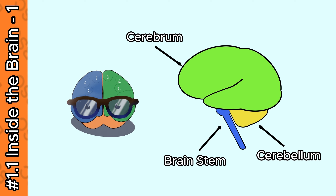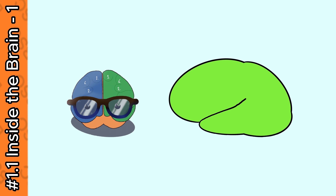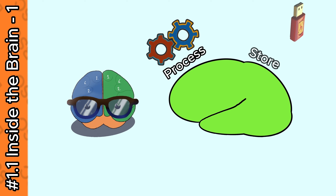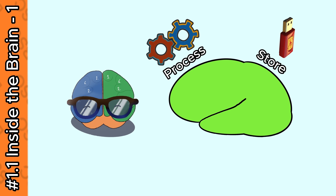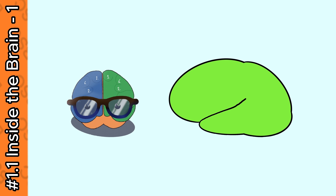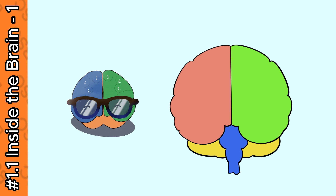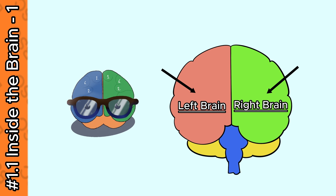Out of these three, we will only focus on the cerebrum, which is a gift of nature to human evolution. This is where we process and store all the complex information like emotions and memories. Looking at the cerebrum from the front reveals that it has two halves: the left brain and the right brain.